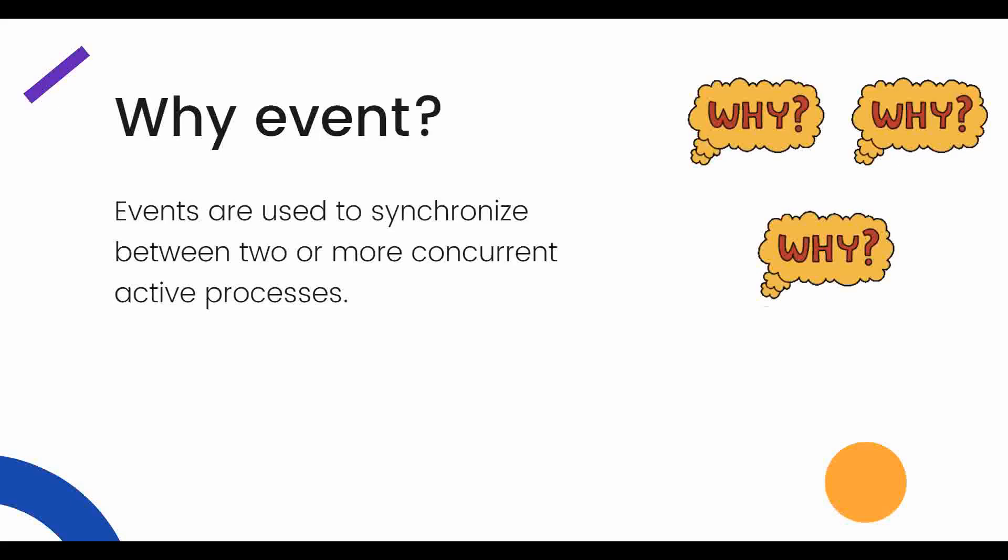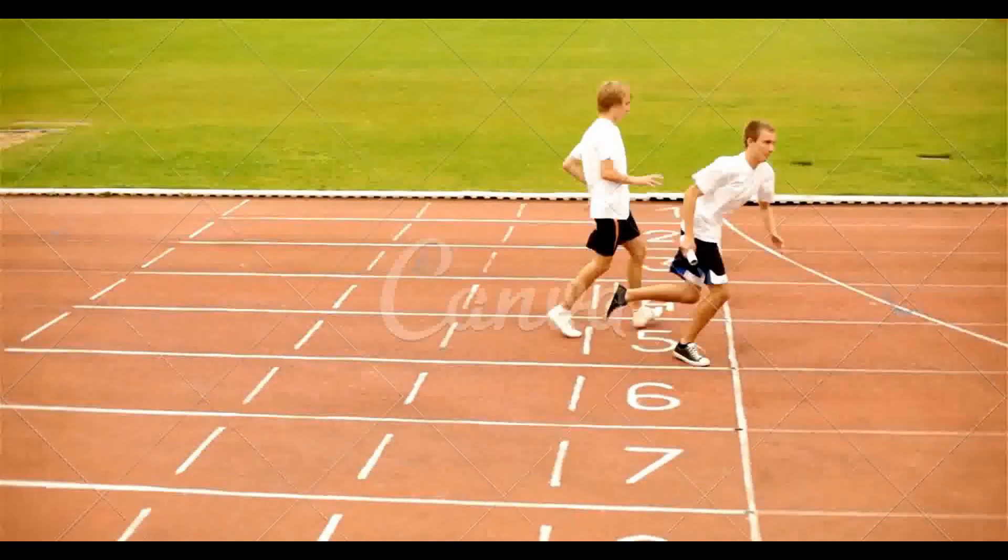Suppose there are many active processes — to synchronize them we need events. For an analogy, imagine a keyboard in front of your eyes where all the keys are events and there are active processes. Whenever you want to type 'R' on your screen, you trigger the R by pressing the key, and R gets printed. Similarly, to select or synchronize concurrent processes, we basically need events.